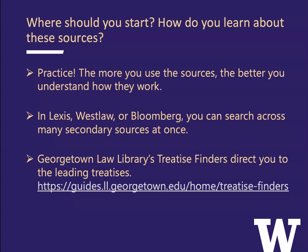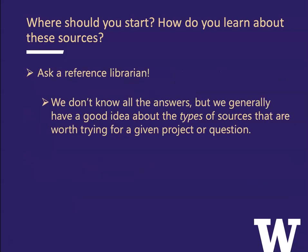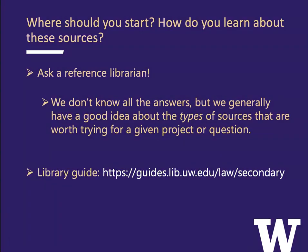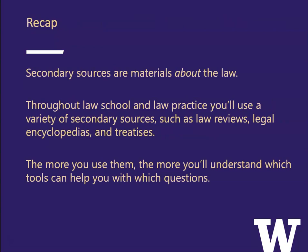I also think it's really great to ask a reference librarian. We don't know all the answers, but we generally have a good idea about the types of sources worth trying for a given project or question. Go ahead and ask us — 'I'm looking for information about this case,' 'I'm looking for information about the historical development of this doctrine,' 'I want social science commentary on this legal development.' We can often direct you to a good type of secondary source. We also have a library guide on secondary sources.